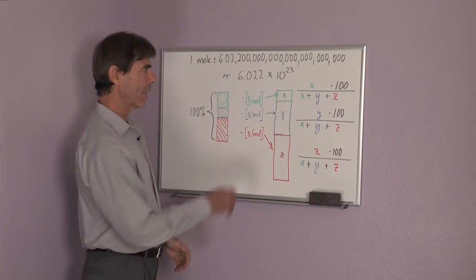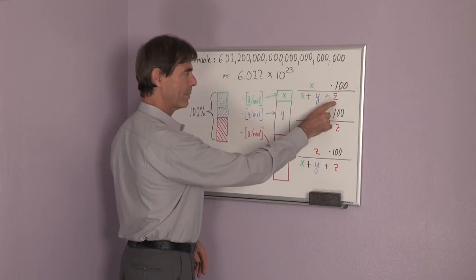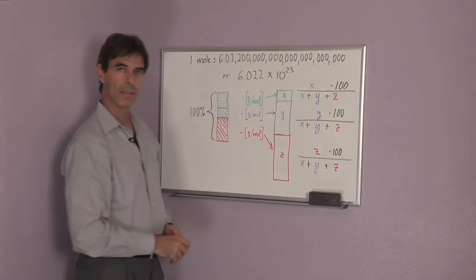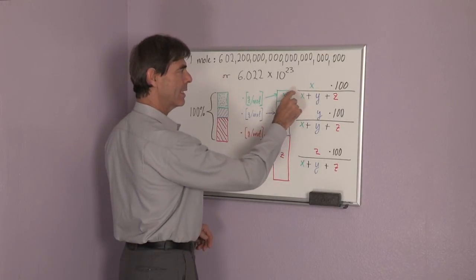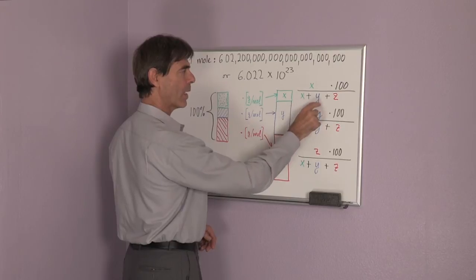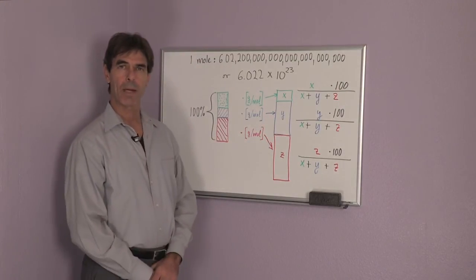So for the green substance, the mass percentage is X divided by the sum of X, Y, and Z, and then multiplied by 100 so that we have it in a percentage.